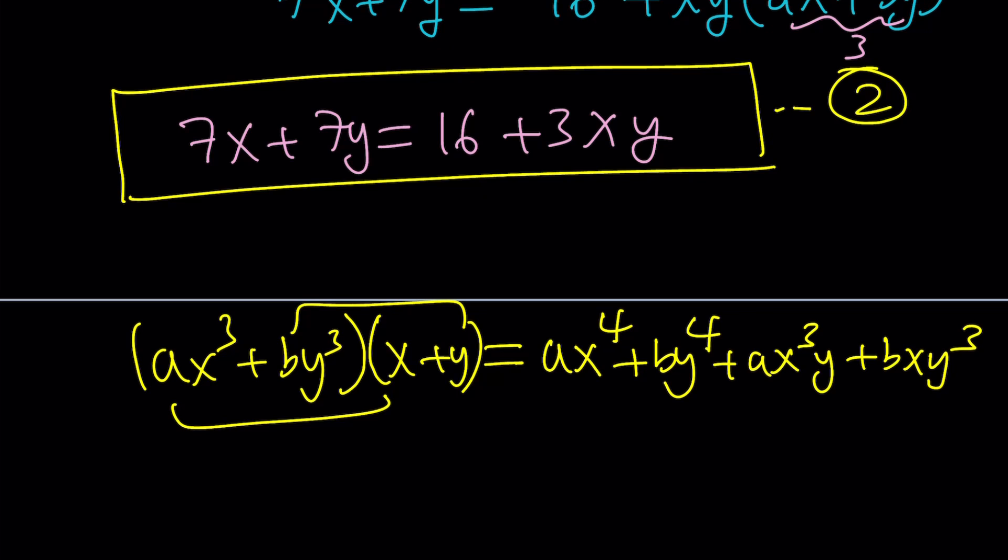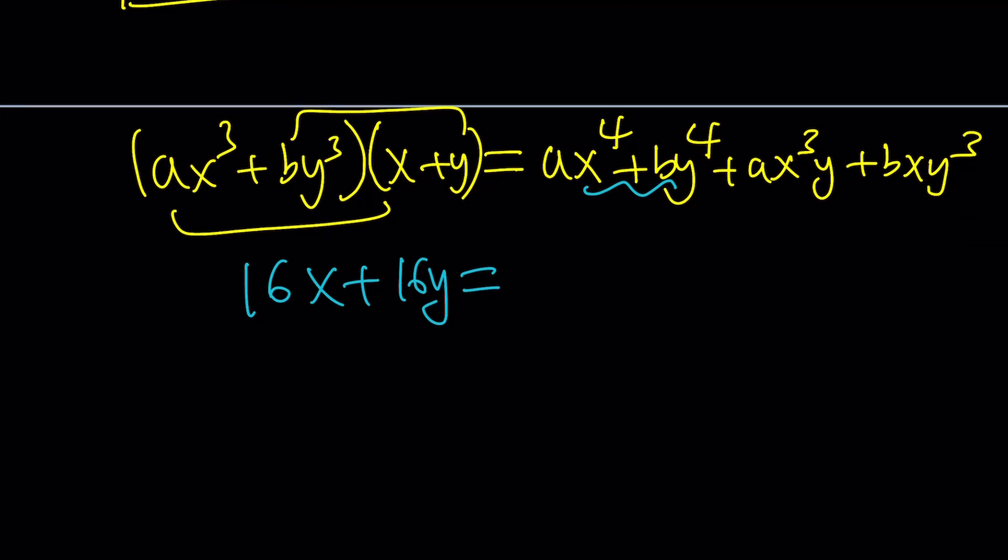Let's see. Now, we do know ax cubed plus by cubed is equal to 16. So this is 16x plus 16y. And this is also given as 42. In the equation, remember, we had four equations from first power all the way through to the fourth. And then, these two can be factored. We can take out xy. And this gives us ax squared plus by squared.